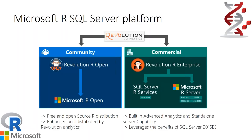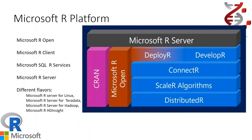With the support of R Server, you can now connect your data or push your computations to other systems like Hadoop, Teradata, or even in the cloud. The Microsoft R product family is: Microsoft R Open, R Client, Microsoft SQL R Services, Microsoft R Server, and then a couple of different versions of Microsoft R Server based on flavor — for Linux, for Teradata, for Hadoop, or for HDInsight. It is developing quite fast, so check for any novelties in terms of new connectors to the product family.